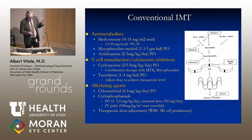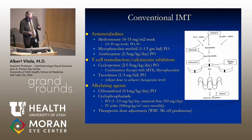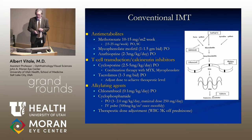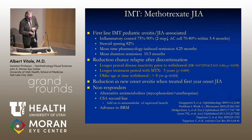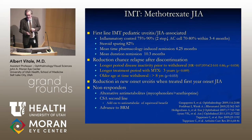Immunomodulatory therapy can be divided into conventional and biological treatment. Conventional treatment is subdivided into anti-metabolites, T-cell transduction inhibitors, and alkylating agents. By far we use anti-metabolites most frequently, including methotrexate and mycophenolate mofetil, sometimes with cyclosporine as add-on therapy. Alkylating agents are much less commonly used today because of real toxicity and better alternatives in biological agents.